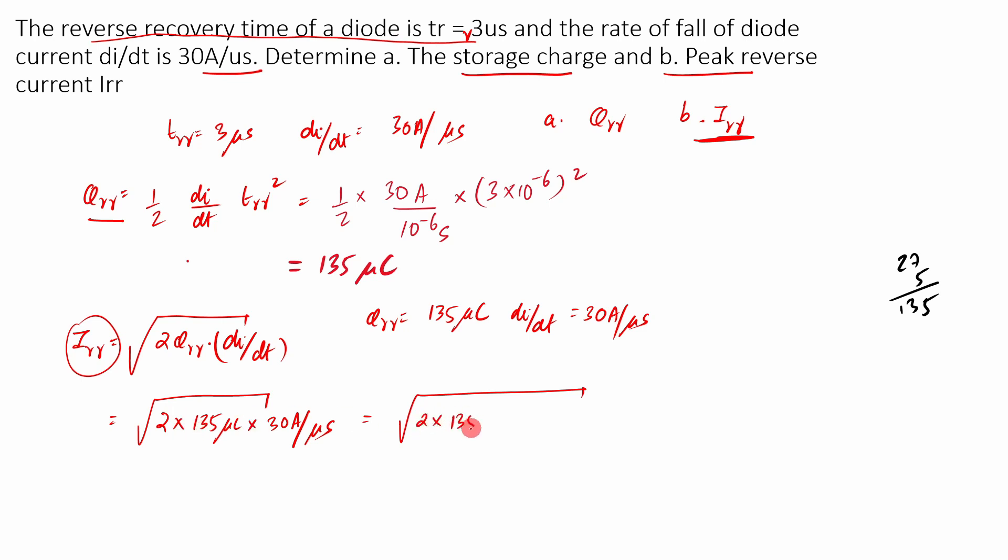So 2 into 135 into 10 power minus 6 coulombs. So you can convert microcoulombs into coulombs by multiplying by 10 power minus 6, multiplied by 30 ampere, so this is okay, divided by, this is microseconds, this is microseconds divided by 10 power minus 6, seconds. So this will become 10 power minus 6 seconds. So you can easily see that this will get cancelled and this will get cancelled, so you will get root of 2 into 135 into 30.